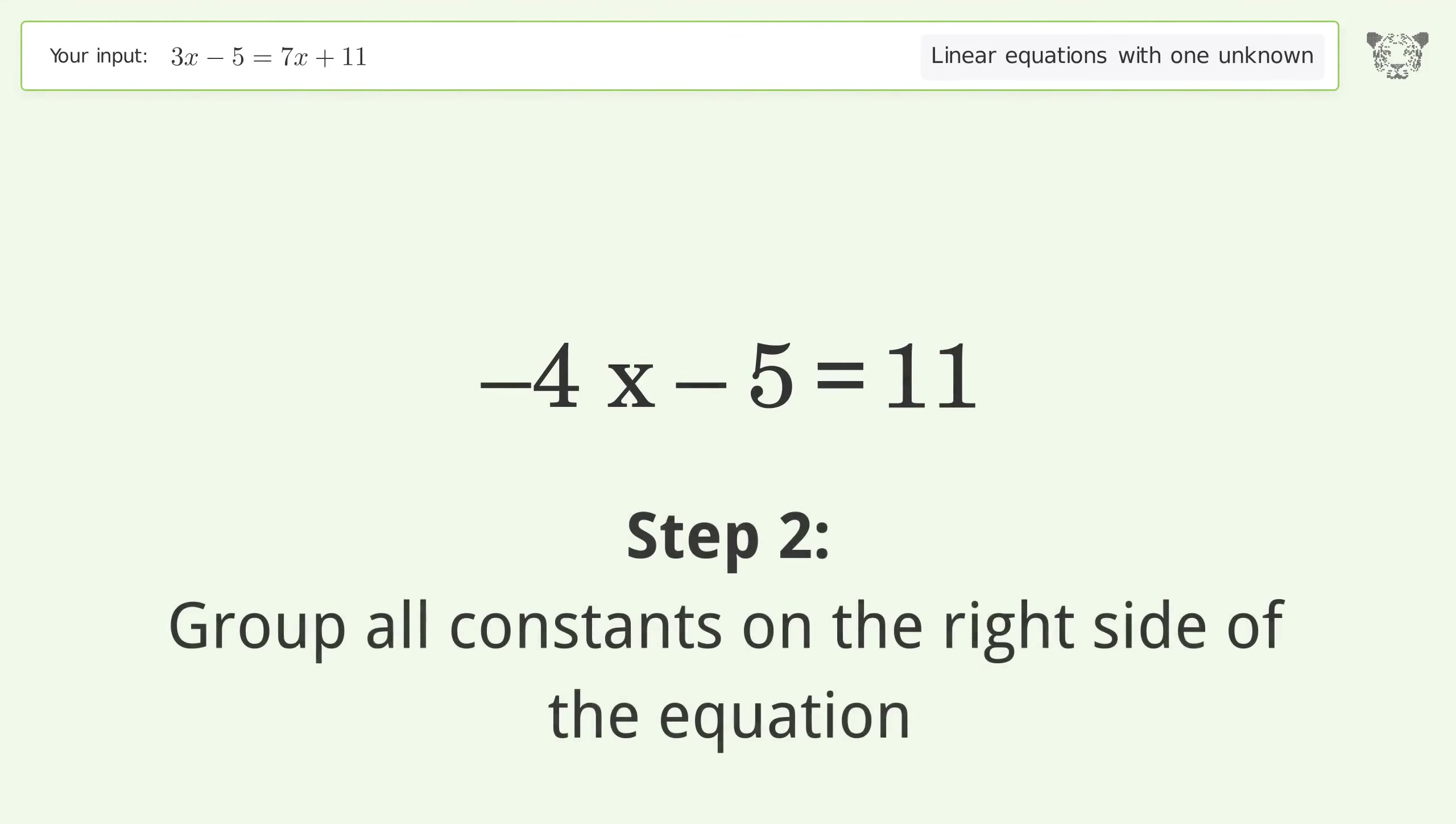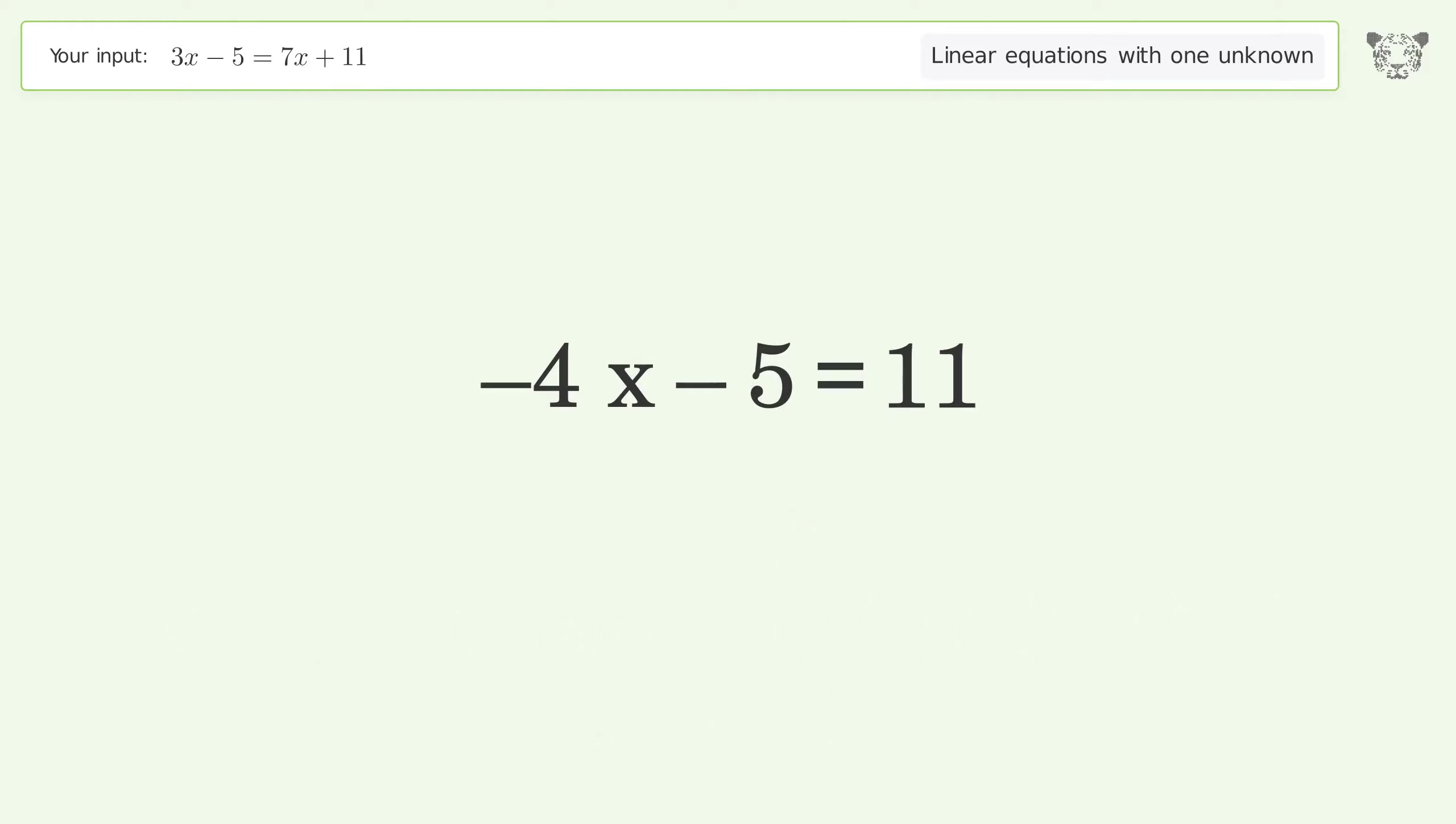Group all constants on the right side of the equation. Add 5 to both sides. Simplify the arithmetic.